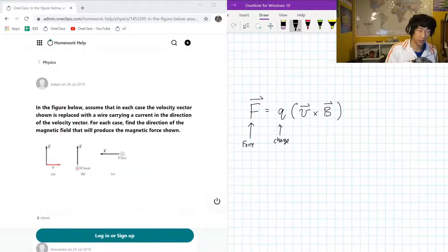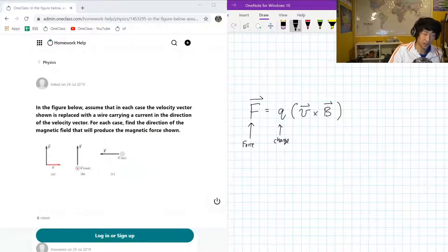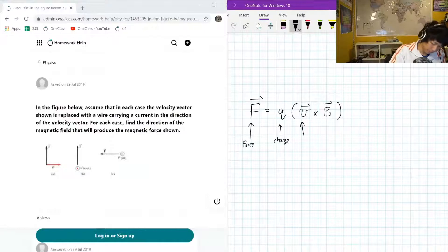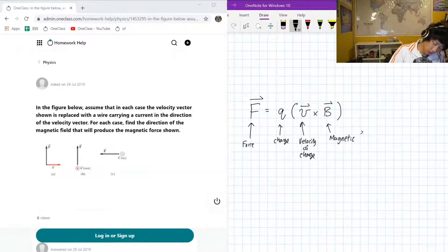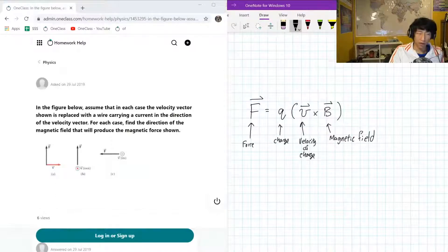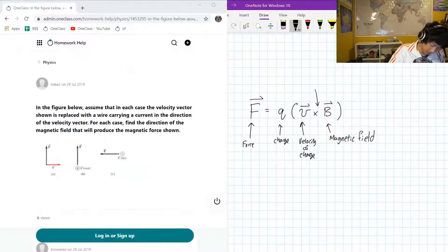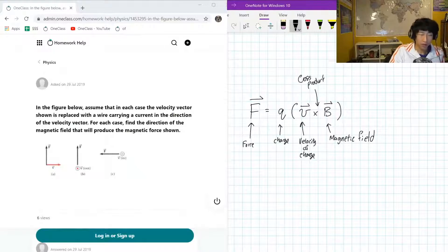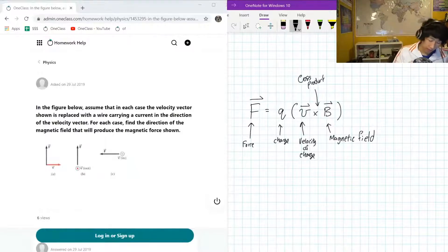But since we're just worried about the direction, we don't really need to worry about actually doing the calculation. It's good to know who everyone is. Here we have a velocity of charge, here we have magnetic field. Okay, now keep in mind, this is a cross product, right? So due to the fact that it's a cross product, we have to follow our right hand rule. Hopefully you have a right hand with you.